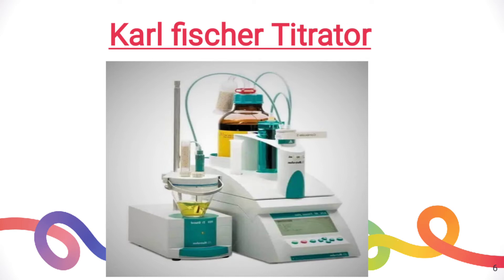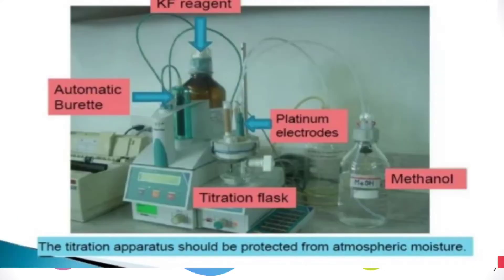This is how the Karl Fischer titrator looks like. The different parts of the titrator are shown here. The amber glass bottle that we can see is used to fill KF reagent, as KF reagent is light sensitive and is therefore stored in an amber colored bottle. There is also an automatic burette, titration flask, and a double platinum electrode used for the purpose of accuracy, along with a bottle of methanol.